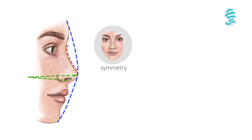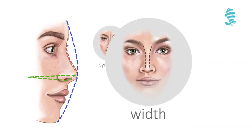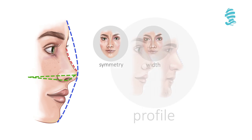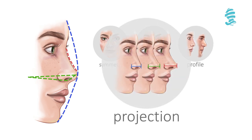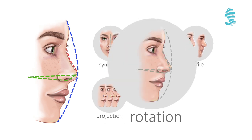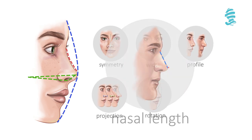The six key parameters are: symmetry, width, profile, projection, rotation, and nasal length.